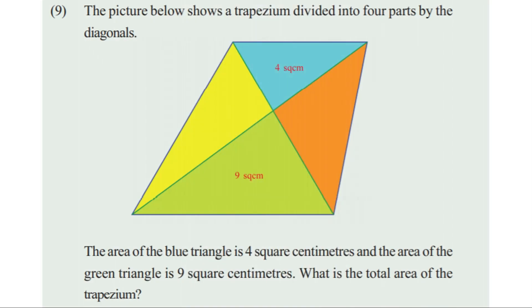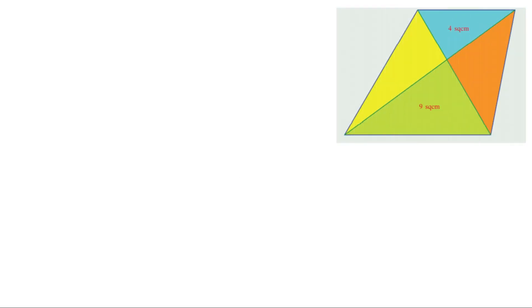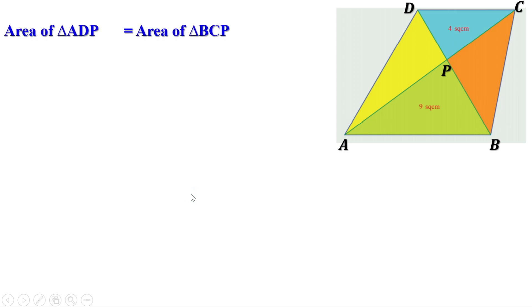Next problem. The picture shows a trapezium divided into four parts by the diagonals. The area of the blue triangle is 4 cm² and the area of the green triangle is 9 cm². What is the total area of the trapezium? ABCD is a trapezium, so AB and CD are parallel. The two side triangles are equal in area; let us call that area X. So the area of triangle ADP = X and area of triangle BCP = X.